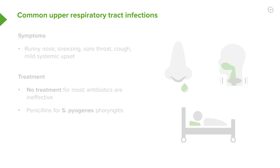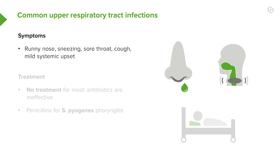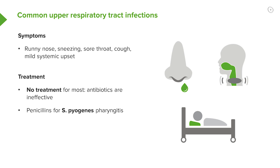Patients with upper respiratory tract infections present similarly regardless of the pathogen: sneezing, a sore throat, cough, mild systemic upset, a bit of a fever, feeling unwell, wanting to go to bed. The treatment is not much — we largely leave it and people get better most of the time. If you have Streptococcus pyogenes pharyngitis, antibiotics would be helpful and penicillin would be beneficial in those circumstances.